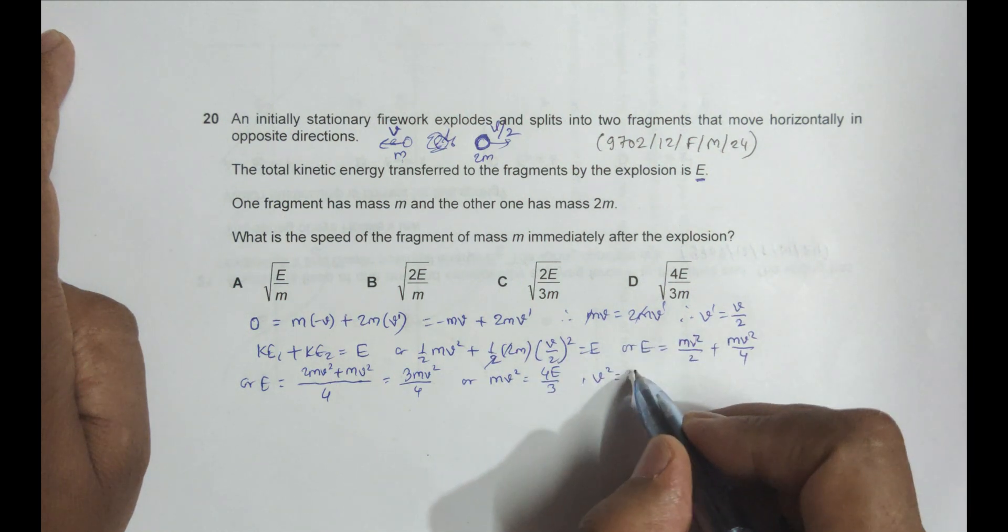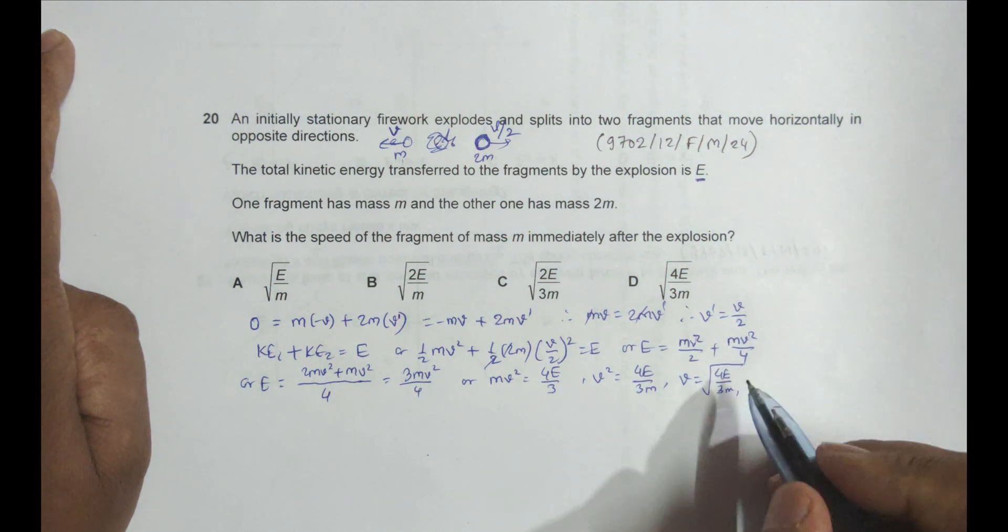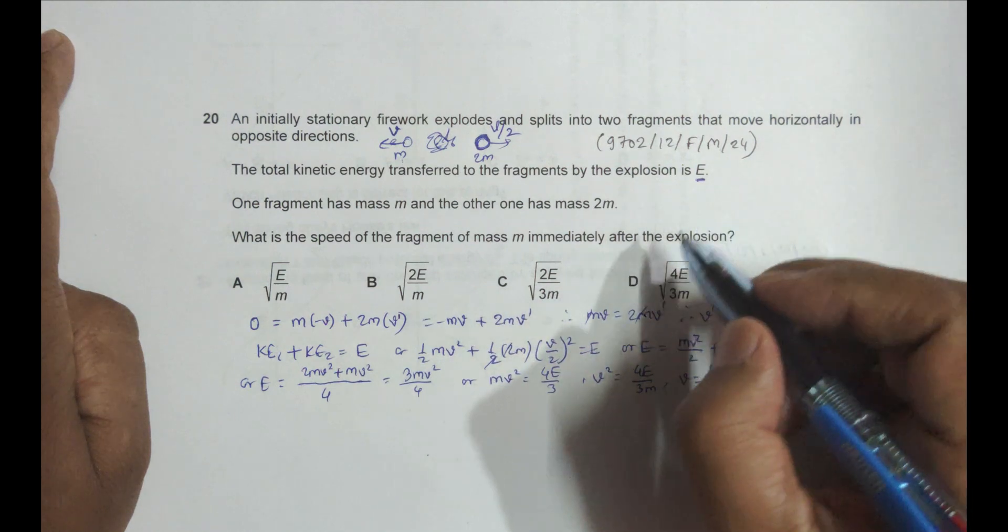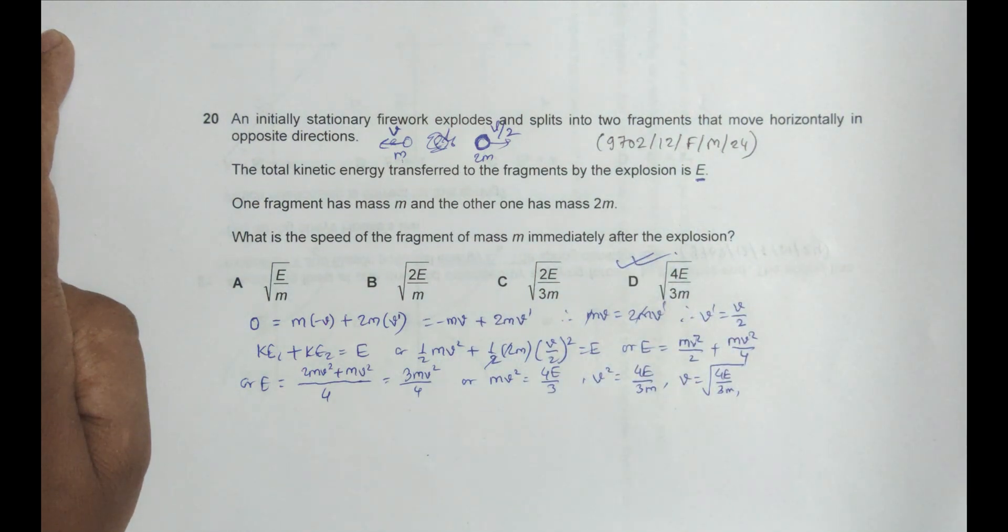And then V² = 4E/3M, so this gives us V = √(4E/3M). And this answer is available in choice number D, so D should be the correct choice. So lots of algebra here.